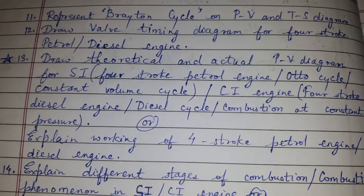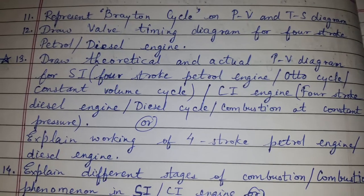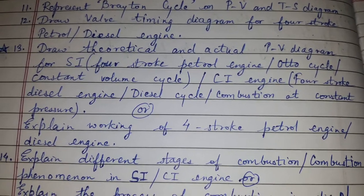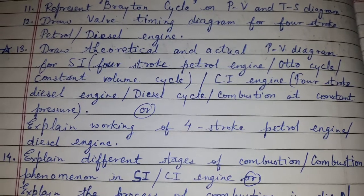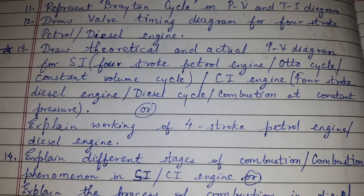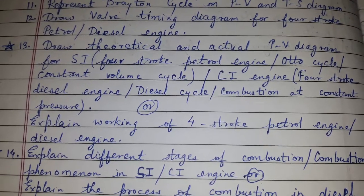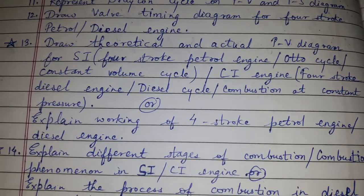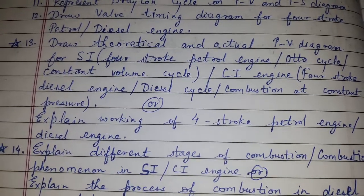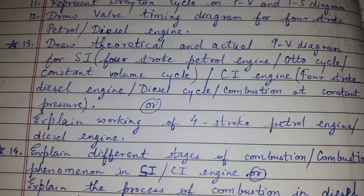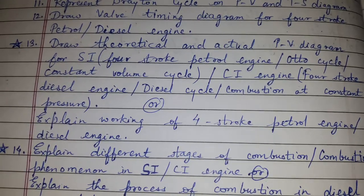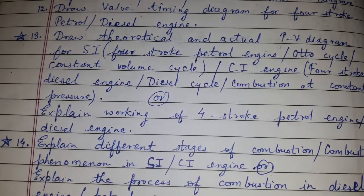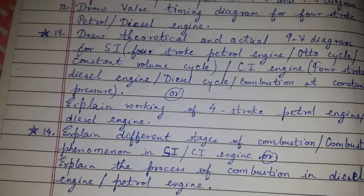Also known as the Otto cycle, autocycle, or constant volume cycle. It may also be asked to draw the theoretical and actual PV diagram for a CI engine, which is a four-stroke diesel engine — diesel cycle or combustion at constant pressure. Another question that may be asked is to explain the working of a four-stroke petrol engine or diesel engine.